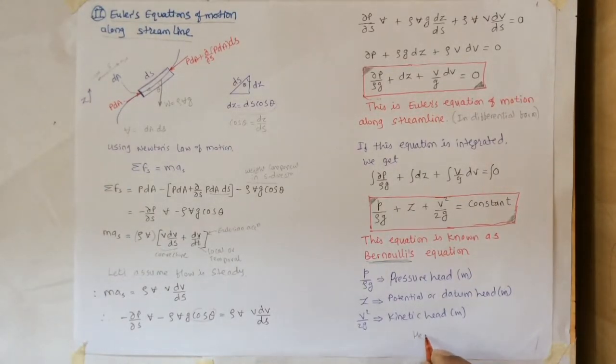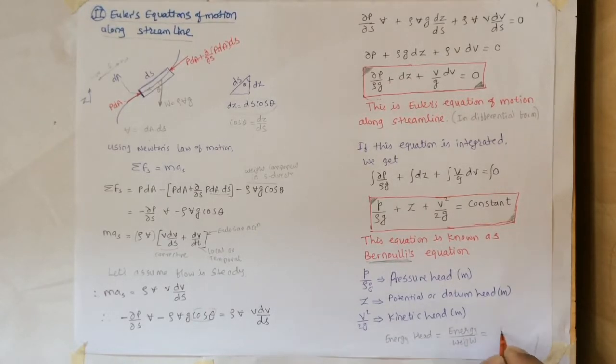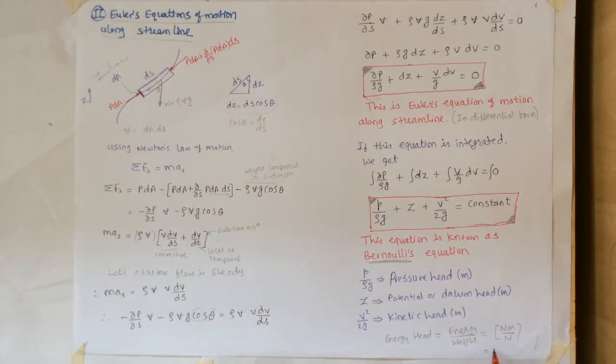We are having the terms not in the unit of energy but energy head. So energy head can be defined as energy per unit weight. Energy has unit of newton meter and weight has unit of newton. So we get energy head in unit of meter.